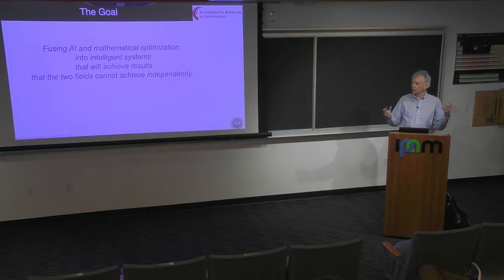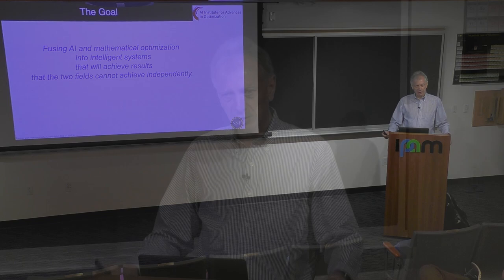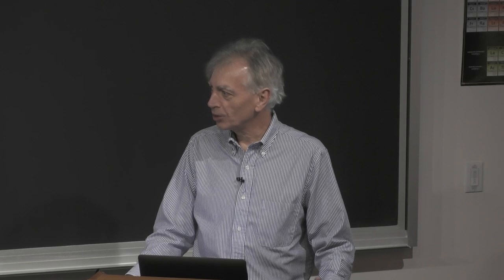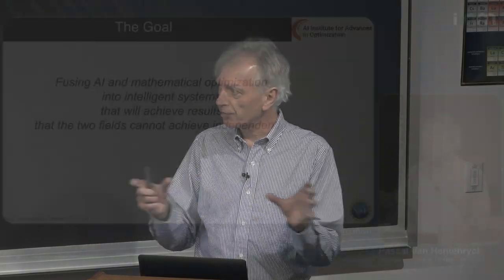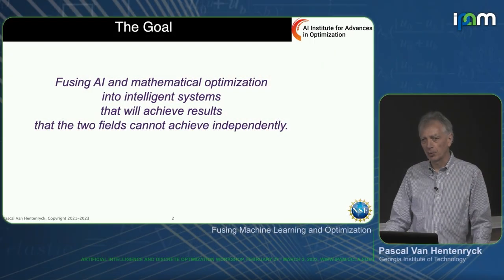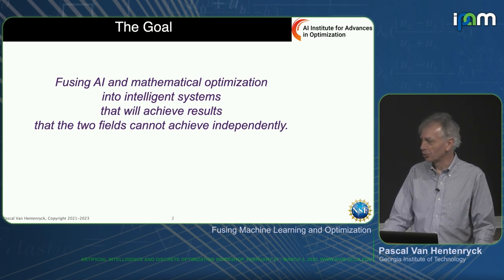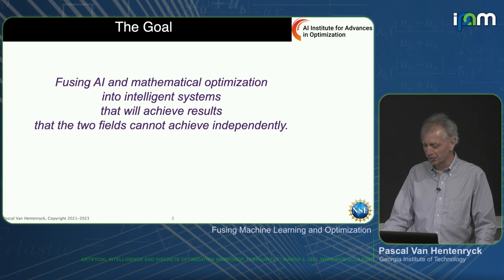What we are trying to do is fuse machine learning and optimization in a way that we can achieve things that independently they could not do. That's really the goal. So many of the things you will see are cooperation between machine learning and optimization — we are not replacing optimization with machine learning, or machine learning by optimization.